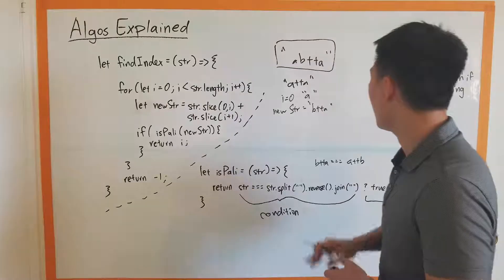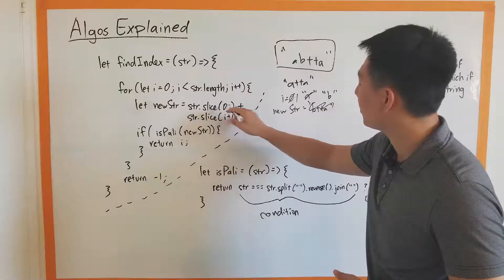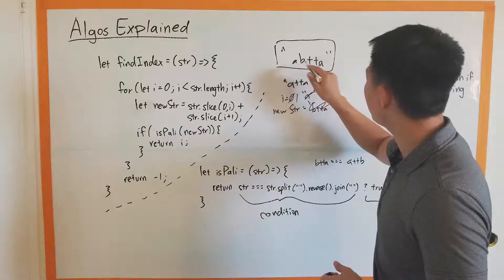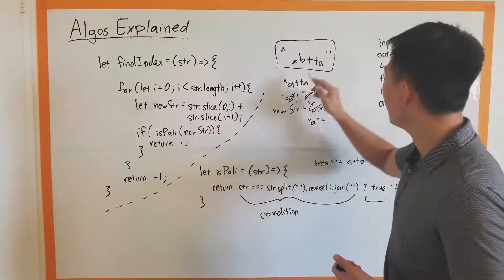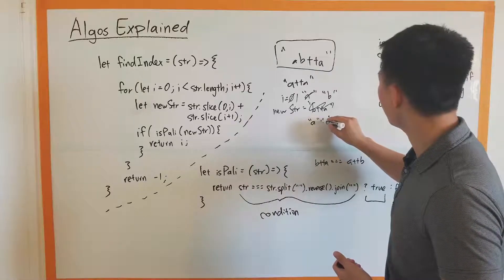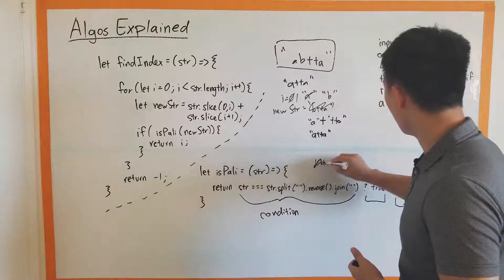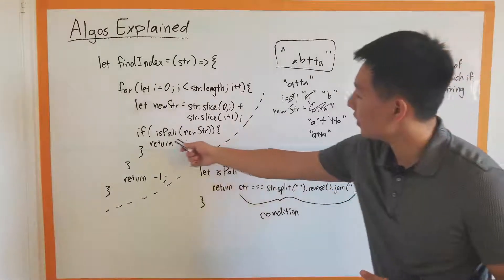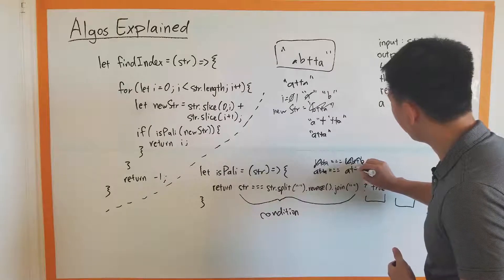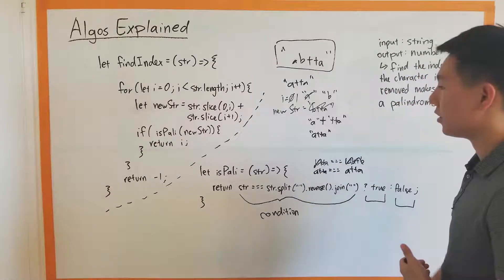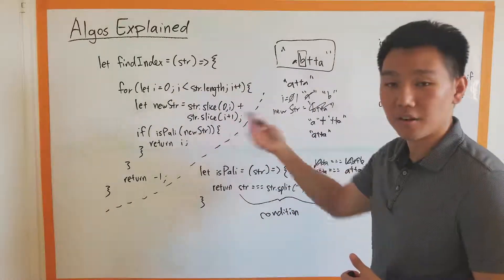Now i is one, looking at B. Our new string is string.slice(0, 1) — just A — plus string.slice(2) — which is T, T, A. So our new string is A, T, T, A. We send that to isPally. Is A, T, T, A the same as A, T, T, A forwards and backwards? Yes! So we return true, and since this is true, we return i, which is one — the index of B. That is the correct output.